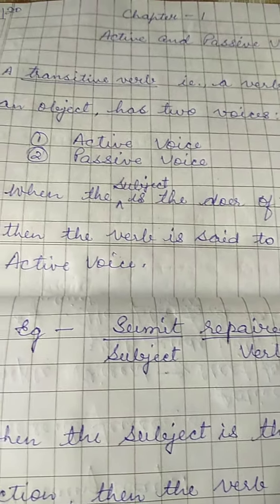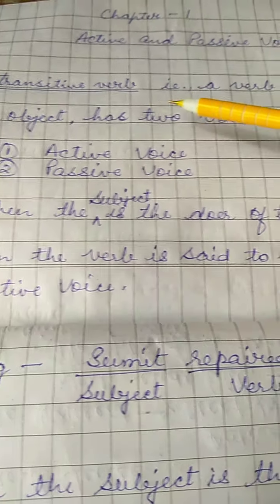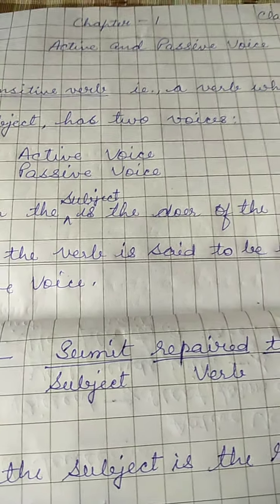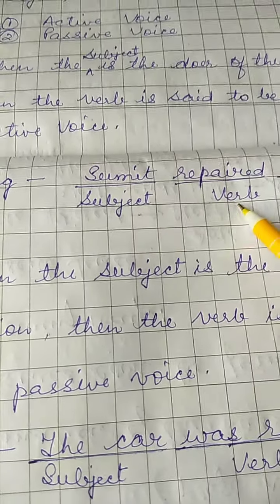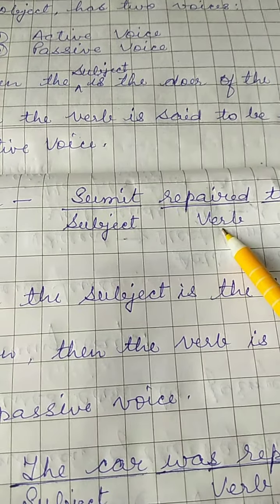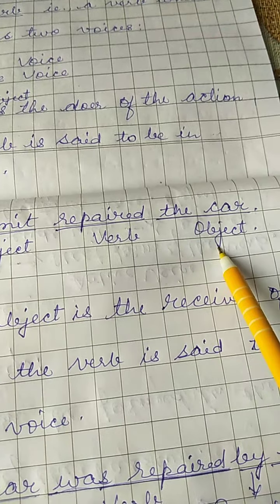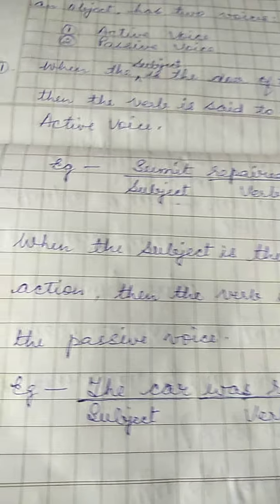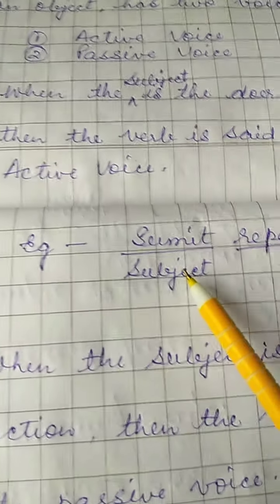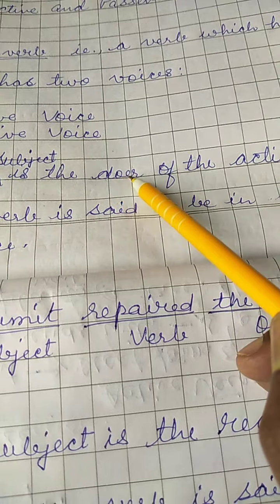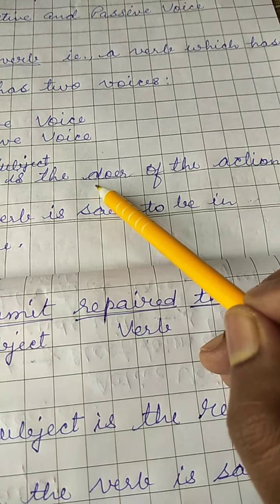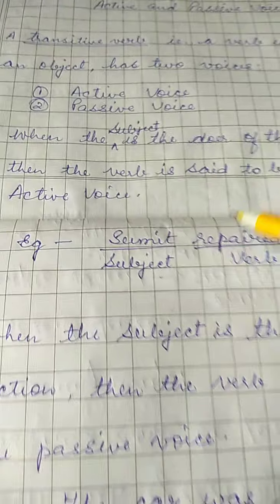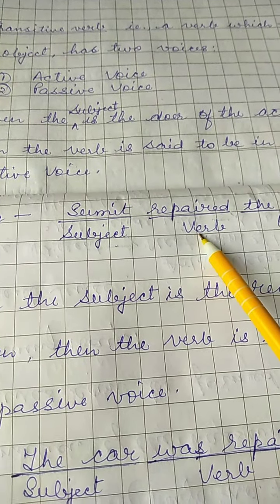As I already said, a transitive verb is a verb which has an object. So this verb is a transitive verb because it has an object — the car is the object. When the subject is the doer of the action, subject is active, then the verb is said to be in the active voice.